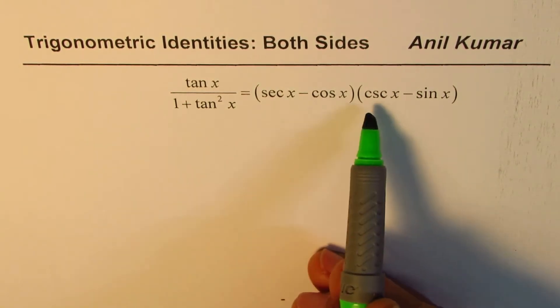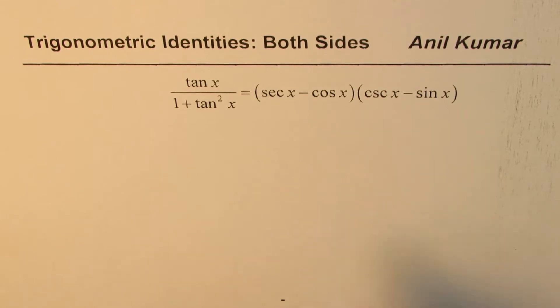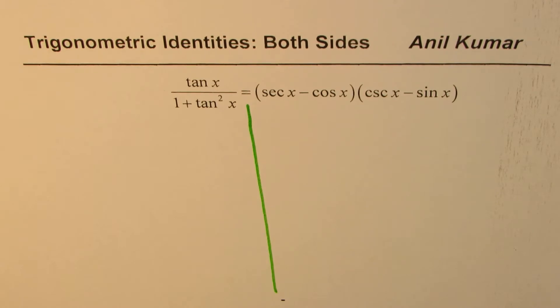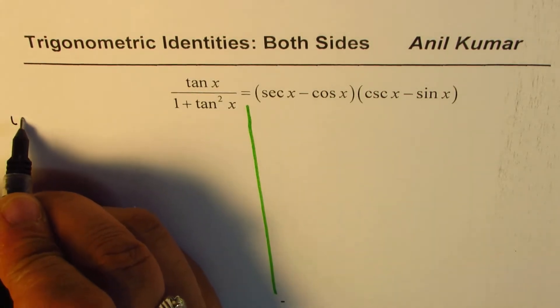I'll prefer to do this question by solving both left side and right side, simplify, and then equate them to be equal. So let's begin with the left side which is tan x divided by 1 plus tan square x.